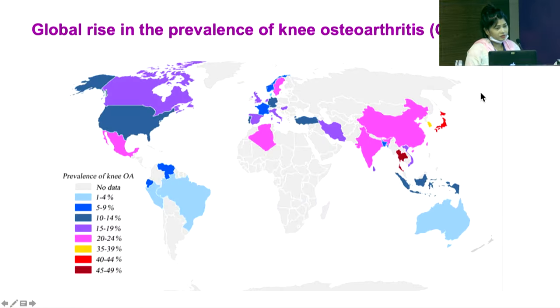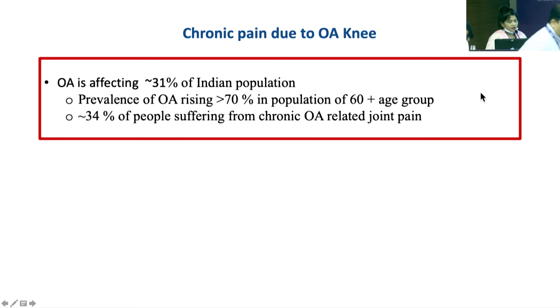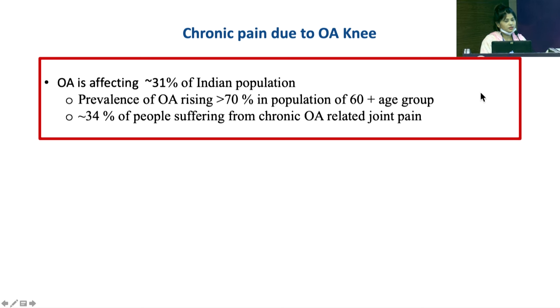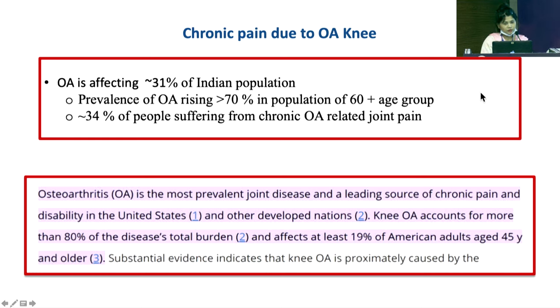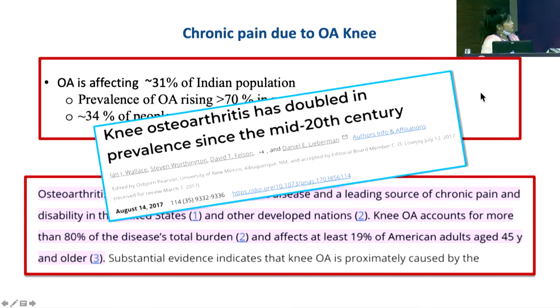Good morning everyone. I'm Dr. Anisha and I'm going to talk on common conditions in the knee treated with local injection. Globally there has been an exponential rise in the prevalence of knee osteoarthritis. It has already affected 31% of the Indian population, with a prevalence of osteoarthritis being more than 70% in the population of 60-plus age group, and 34% of people among them are already suffering from chronic OA-related joint pain. In western countries, the burden forms about 80% of the total disease burden, and 19% of American adults aged 45 and older are also involved.